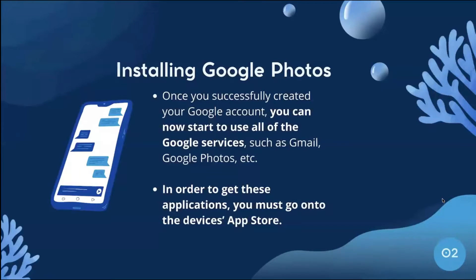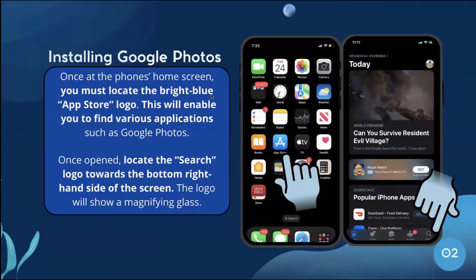Once you create your account, you can install Google Photos and start using all Google services such as Gmail, Google Photos, and more. To get these applications, go into your device's app store. Once at the phone's home screen, locate the bright blue App Store logo. Once opened, locate the search icon — a magnifying glass — towards the bottom right-hand side of the screen.